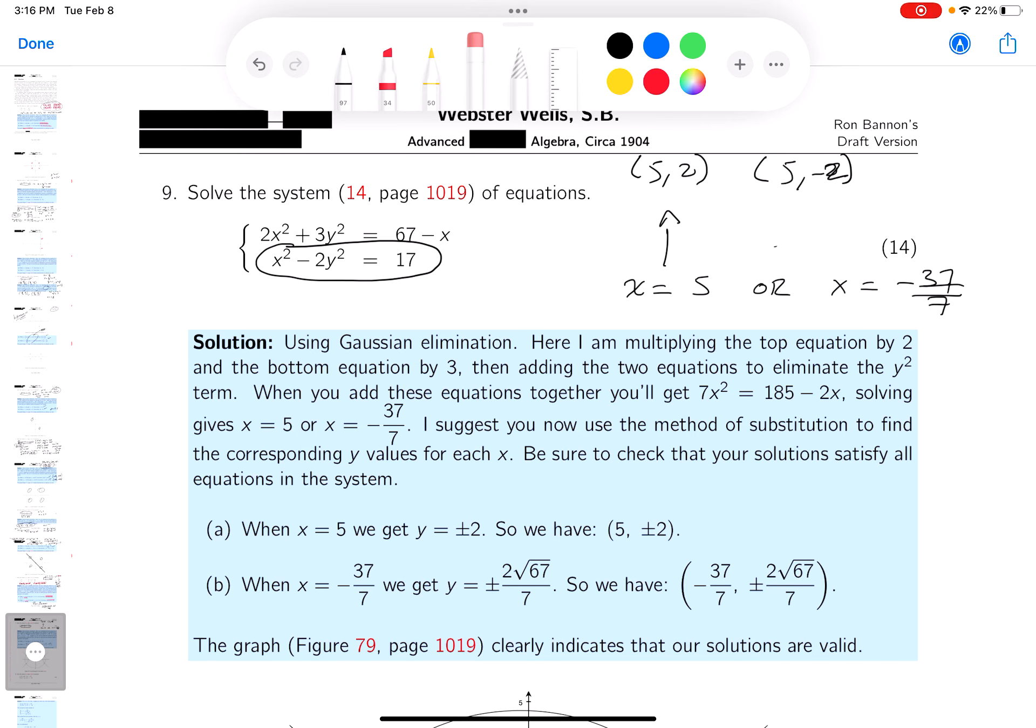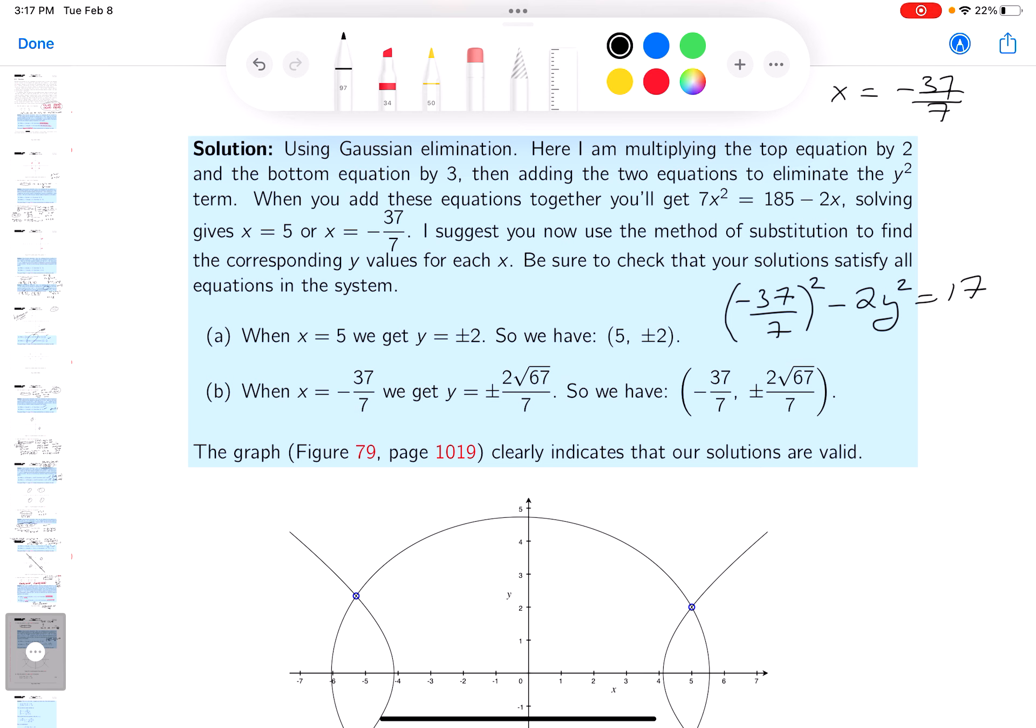I'll leave it as an exercise. You're going to square this number. The 5 was really easy to do, by the way. That's minus 37 sevenths. You're going to square the number, minus 2y squared is equal to 17. You need to solve that for y. I could actually write it down without doing the arithmetic. It would be minus 37 over 7 squared minus 17 divided by 2 is equal to y squared.